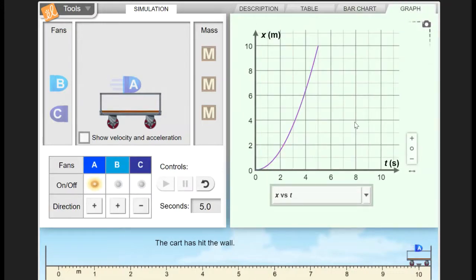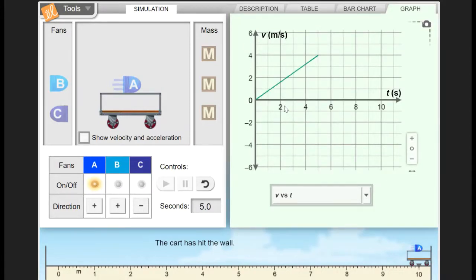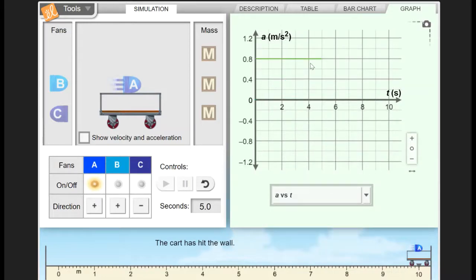And we can also look at that in terms of an actual graph, just a scatter plot, and we have some choices down here. Right now this is position versus time, that's x versus t, but I could make it a velocity versus time graph. I could also make it an acceleration versus time graph.